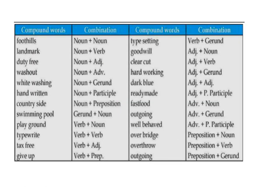Some additional compound words by grammatical structure. Verb + verb: tax-free (verb + adjective). Give up: verb + preposition. Typesetting: verb + gerund.